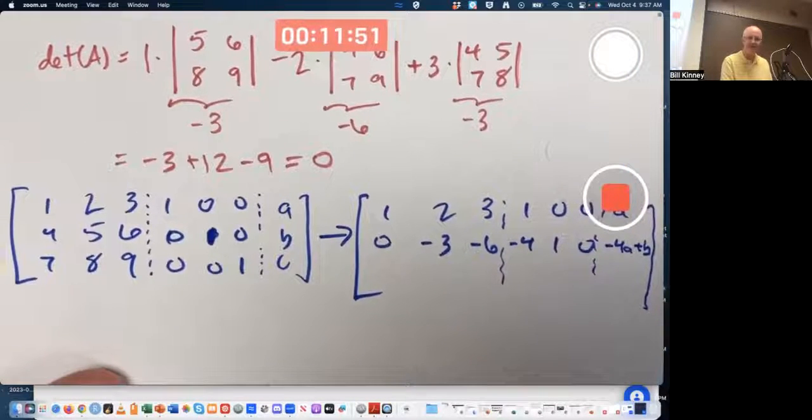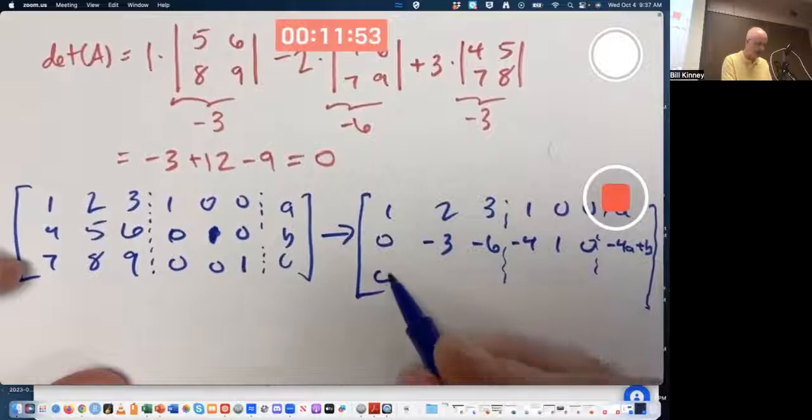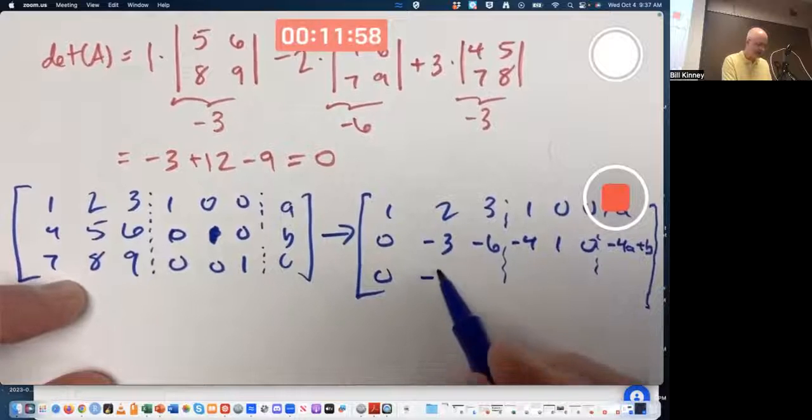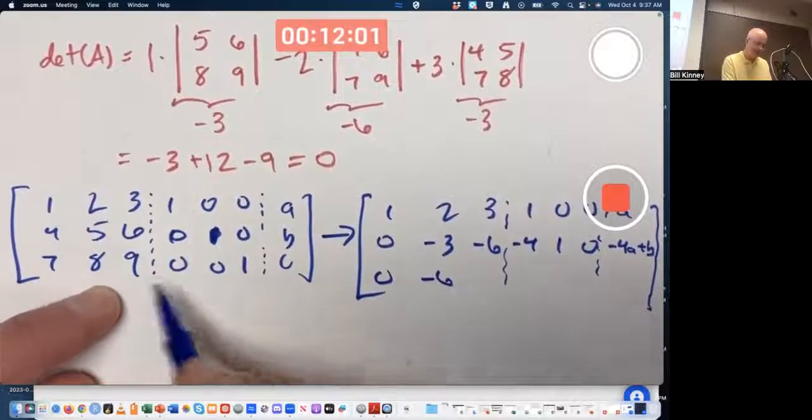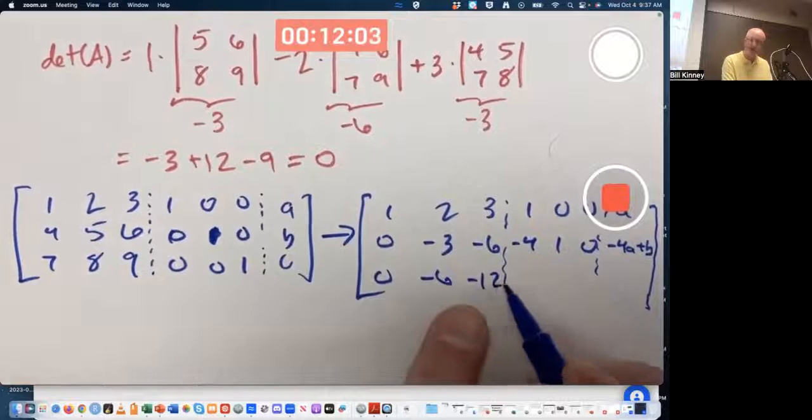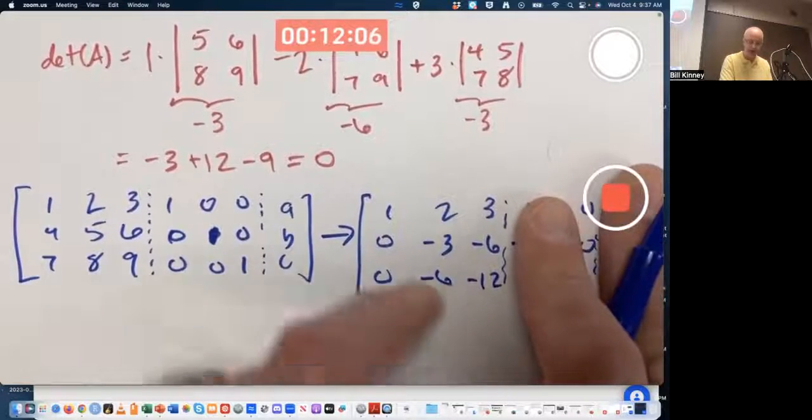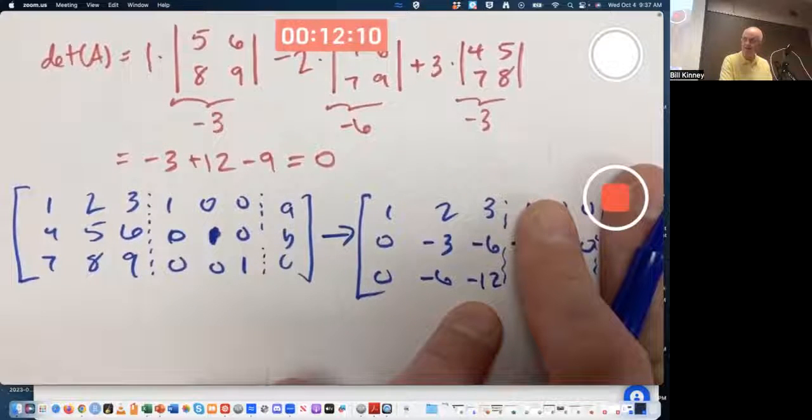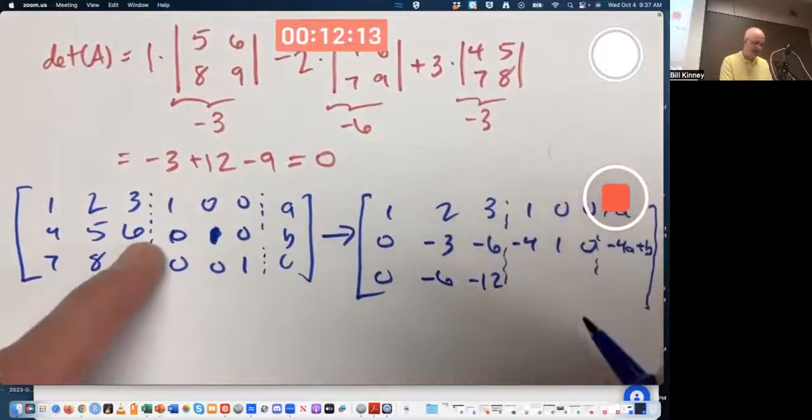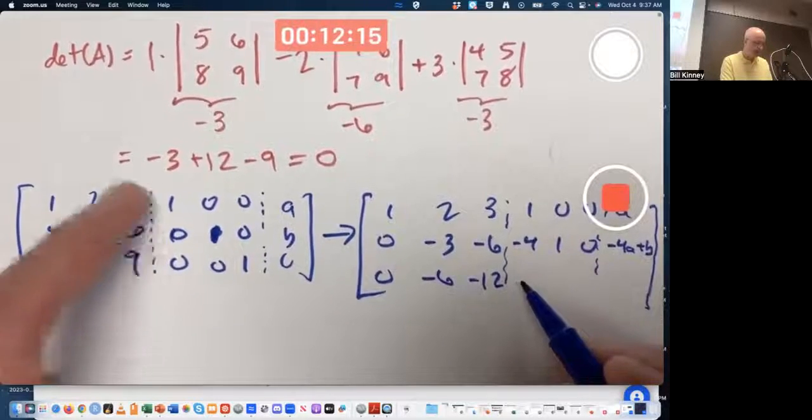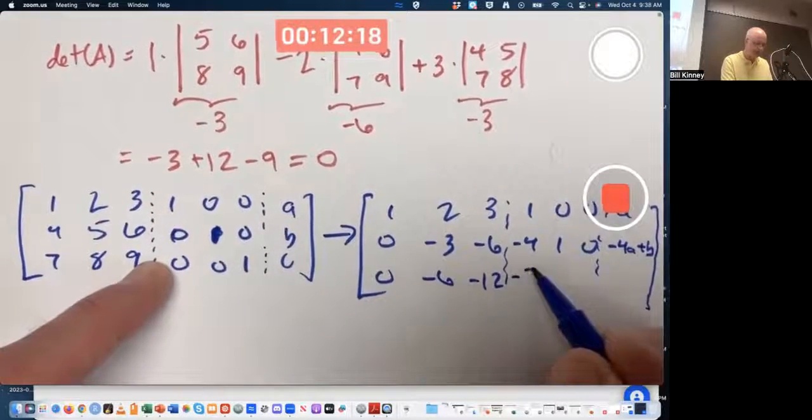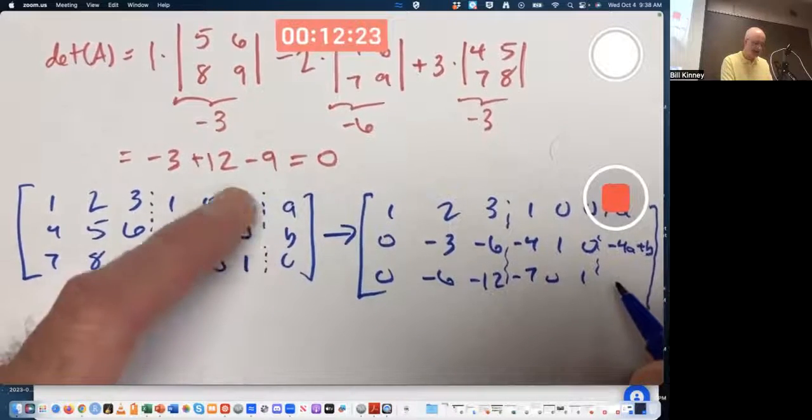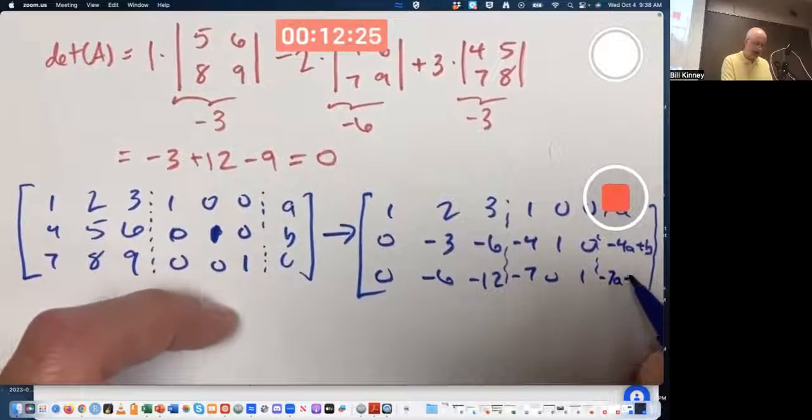It's nice to keep the upper left number being a one because I don't have to change the first row here. I'm going to multiply row one by negative four and add it to row two. Put the answer in row two to get a zero right there. We can do this pretty quickly. I think two times negative four is negative eight plus five is negative three. Three times negative four is negative 12 plus six is negative six. Keep going. One times negative four is negative four plus zero is negative four.